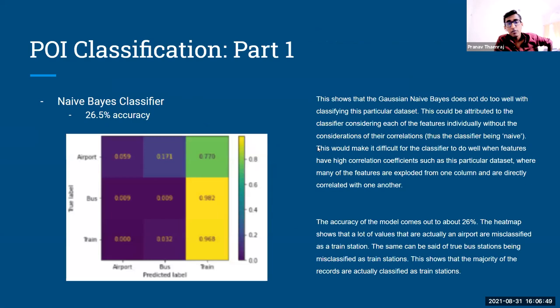So for part one, we went ahead and we chose three classifiers, the first of which was the Naive Bayes classifier. And when ran on this data set, it produced a 26.5% accuracy, which is very low. But that can be attributed to the classifier considering each of the features that we use for this process as an individual, as its own thing, instead of considering it with correlations of other features inside of the data. And so this was essentially our first starting point to see how the data performed against a naive classifier.